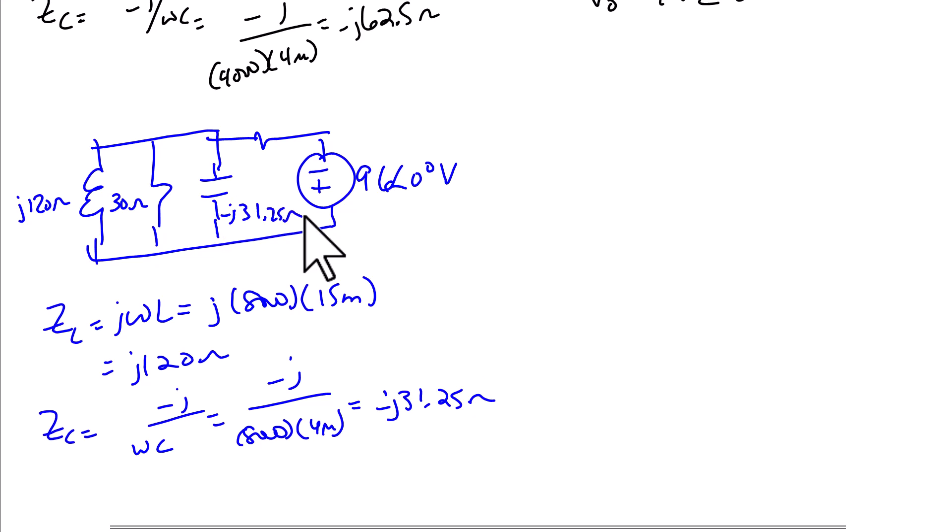And this resistor at the top is still 20 ohms. And V0 is here. And so once again, we're going to do KCL at V0. And we're going to have V0 minus negative 96 over 20 plus V0 over negative J 31.25 plus V0 over 30, plus V0 over J 120, and that equals zero.